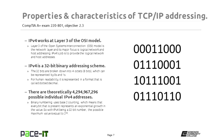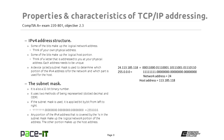With IPv4, there are theoretically 4,294,967,296 possible individual addresses. That's because binary is base 2 counting, so if it's 32 bits, that's 2 to the 32nd power, which gives us over 4 billion possible addresses.